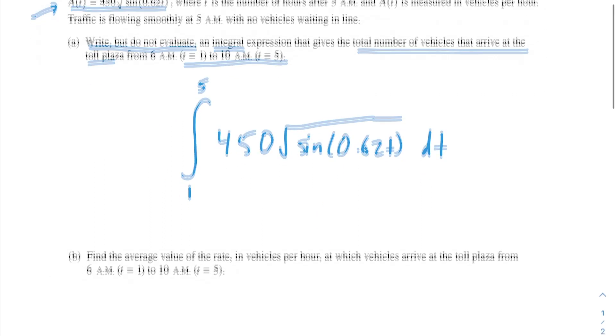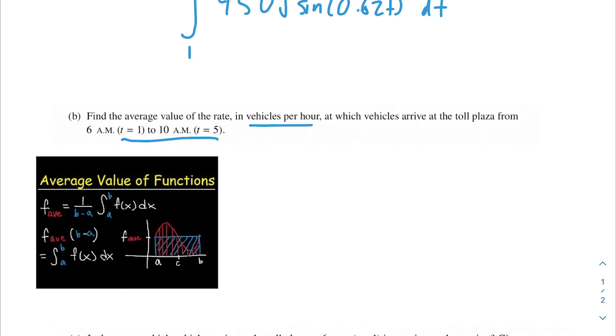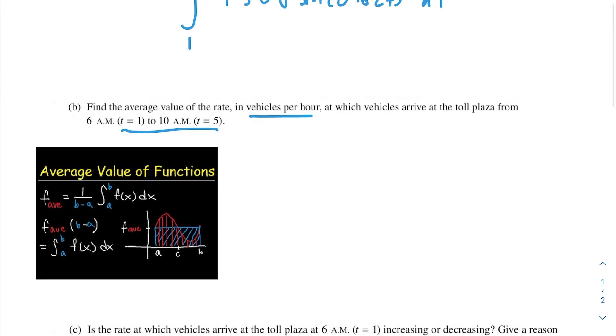Moving on to part B: find the average value of rate in vehicles per hour at which vehicles arrive at the toll plaza from 6 a.m. to 10 a.m., t equals 1 to t equals 5. In this problem, we're going to want to use the average value formula. We can get the average value of a function by using 1 over b minus a, then the integral from a to b of some rate.